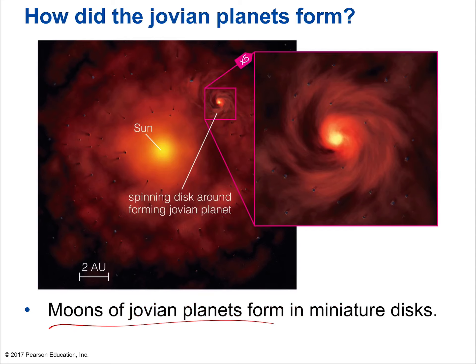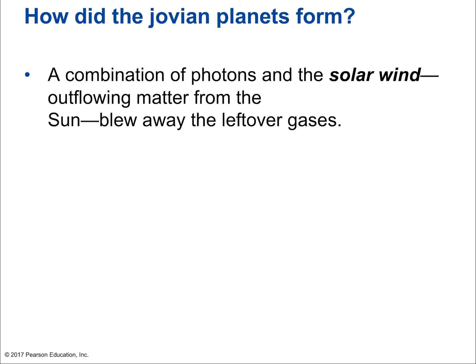The moons of Jovian planets formed as their own miniature disks, because the Jovian planets were so large that their gravity acted like little mini solar systems. Terrestrial planets don't have many moons because they're not big enough. Photons and solar wind from the sun eventually blew away leftover gases. In other solar systems, leftover gas didn't disperse, which may have caused giant planets to spiral inward into orbits close to their star — these are called 'hot Jupiters,' which are very common in other solar systems.